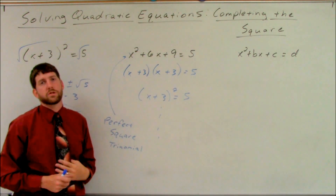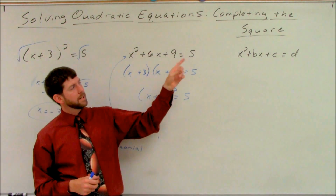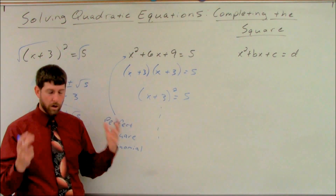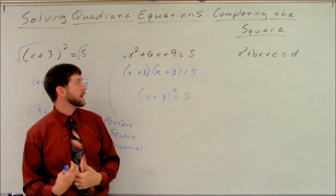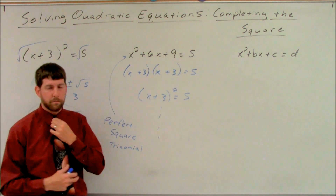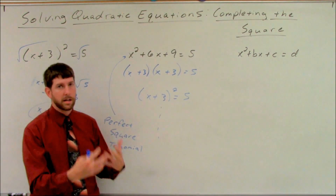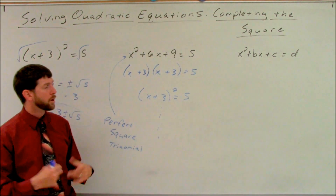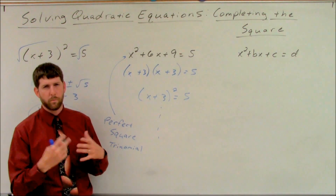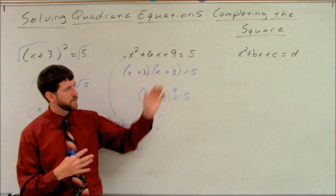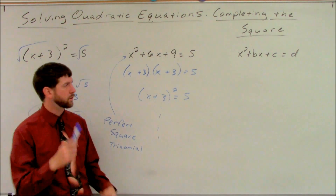What completing the square does is takes any expression, any quadratic equation, and allows us to rewrite it as a perfect square trinomial. That's the completing the square portion — we're going to make it into a perfect square trinomial. So let's look at the relationship between these coefficients and constants that is going to allow us to actually factor.